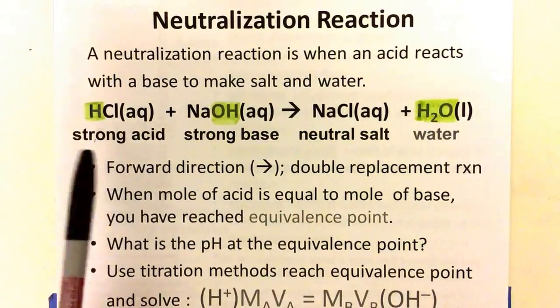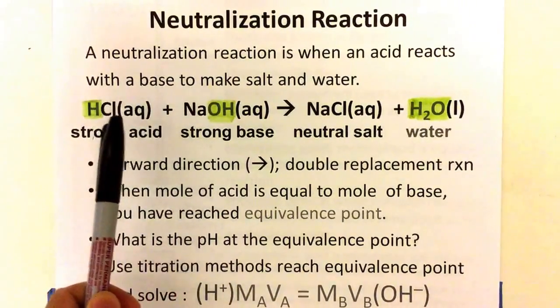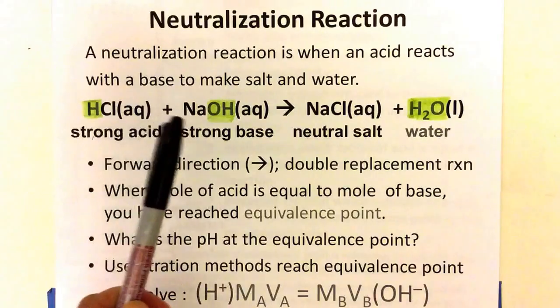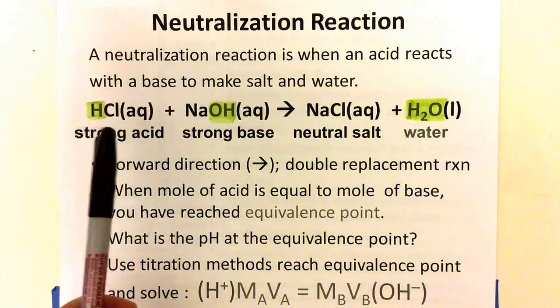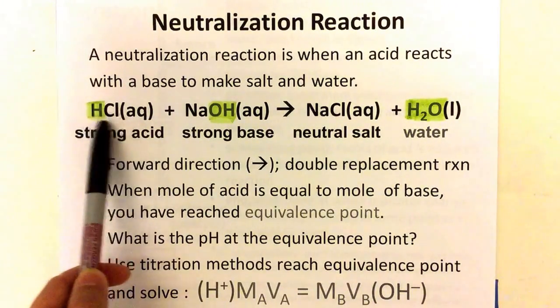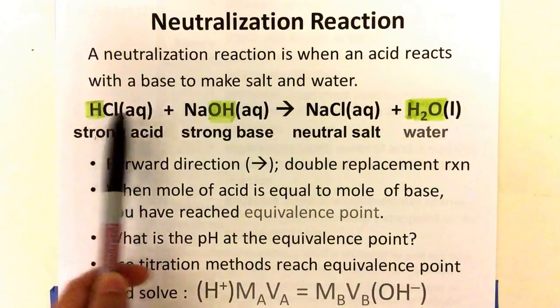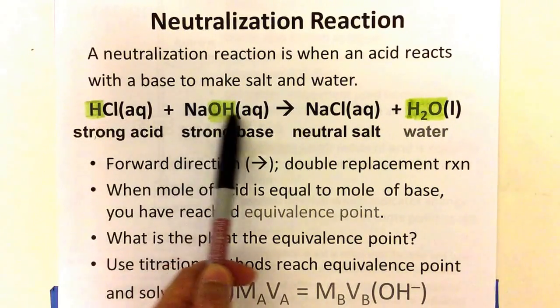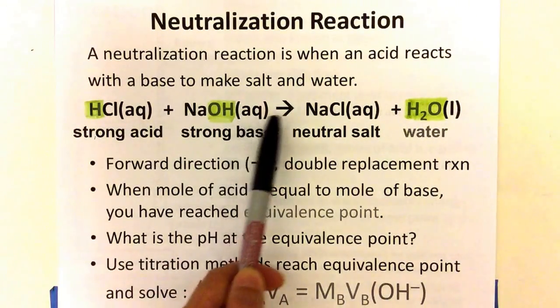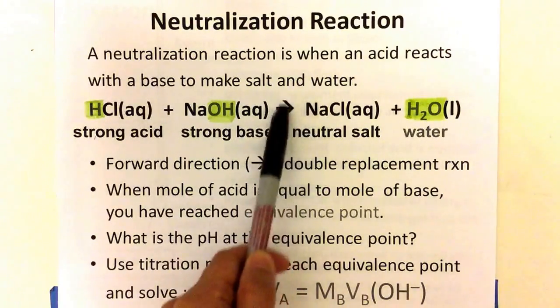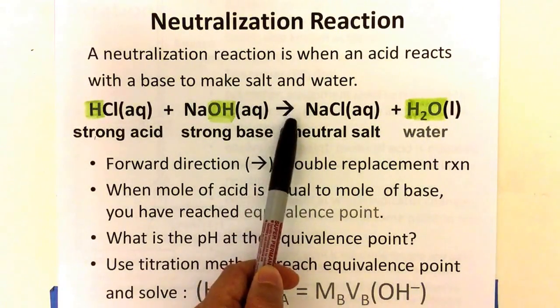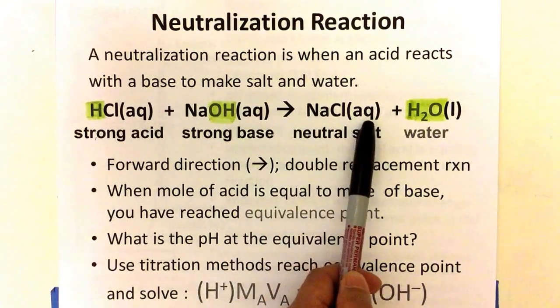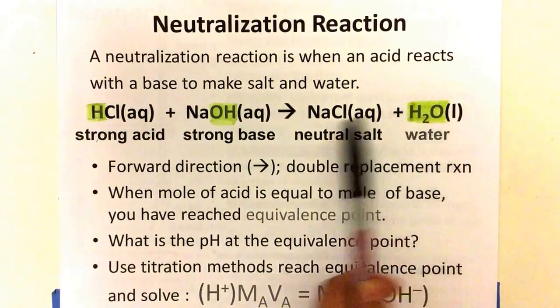Let's look at the variety of acids, strong or weak, or strong or weak bases that can react with one another. In this example, you'll notice a strong acid, hydrochloric acid, reacting with sodium hydroxide, a strong base. In this neutralization reaction, which is a one directional reaction, you'll see salt forming and water. It's not a reversible reaction.